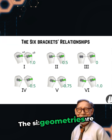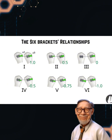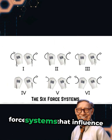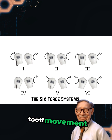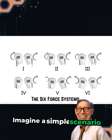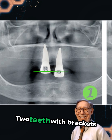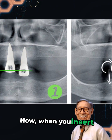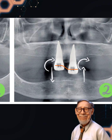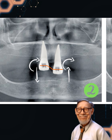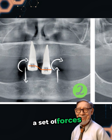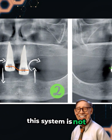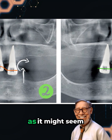The six geometries are based on the relationships between brackets, and how these relationships define the force systems that influence tooth movement. Imagine a simple scenario: two teeth with brackets placed at different angles. When you insert a straight wire between them, it generates a complex force system — a set of forces and moments. However, this system is not as straightforward to predict as it might seem.